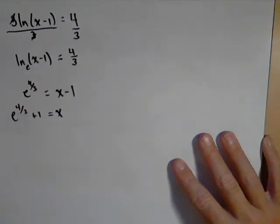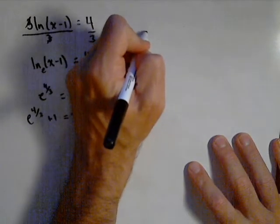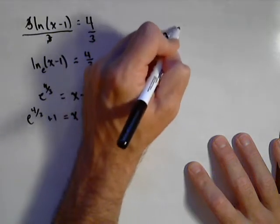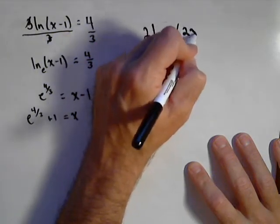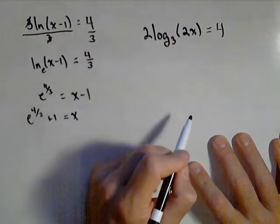Again, this goes for a log of any base. You just have to make sure you match your bases up. For instance, if we had 2 log base 3 of 2x equals 4.